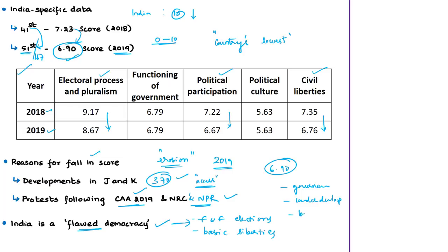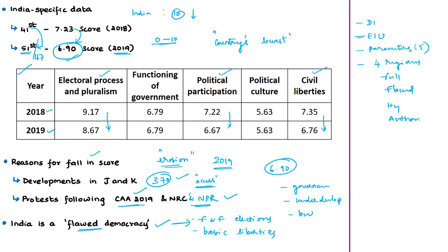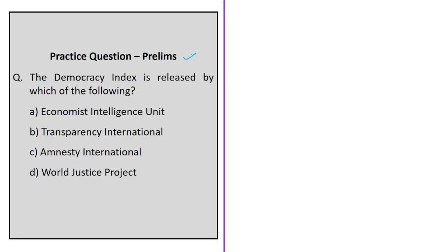To summarize, we have discussed the Democracy Index released by the Economist Intelligence Unit, its five parameters — electoral process and pluralism, functioning of government, political participation, democratic political culture, and civil liberties — and the four regime types: full democracy, flawed democracy, hybrid regime, and authoritarian regime. We also discussed India's rank of 51st and score of 6.90 in 2019. The practice question will be discussed at the end of the session.